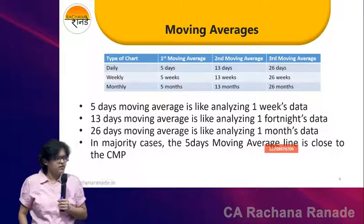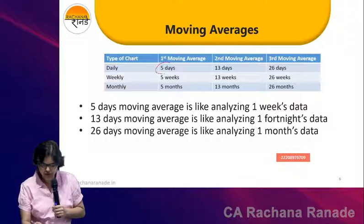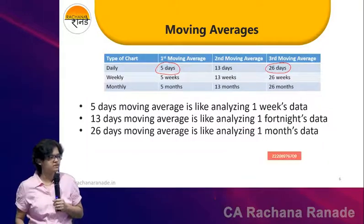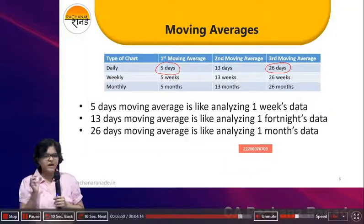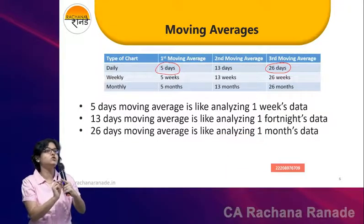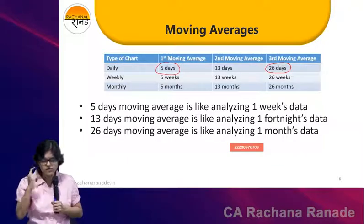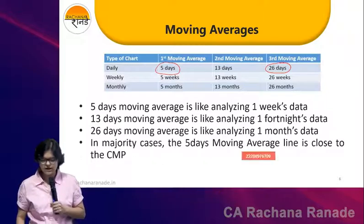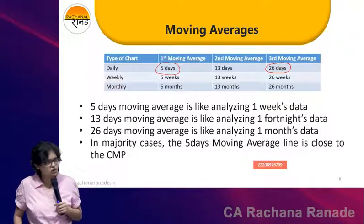Do you agree? Think about it — will the 5 days moving average line be more close to the current market price, or the 26 days moving average line? 5 days, because that's the recent 5 days data. So that average, if plotted as a line, will be very close to our current market price. Of course, I'm going to show this all on the graph also, so that will be more clear to you.